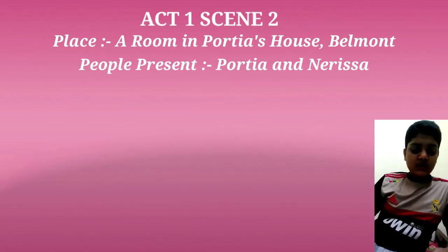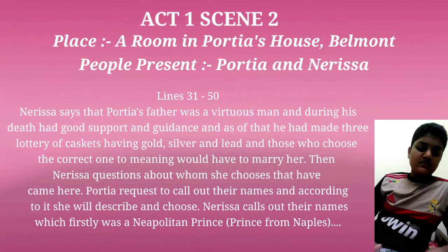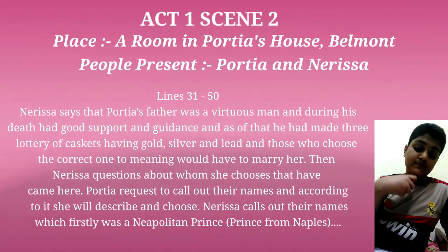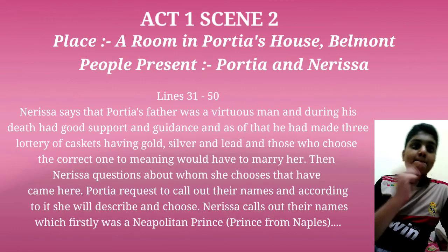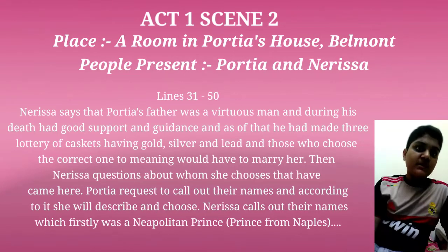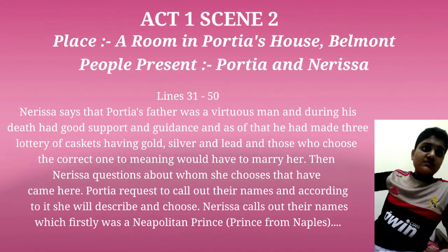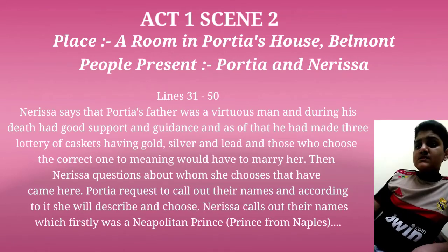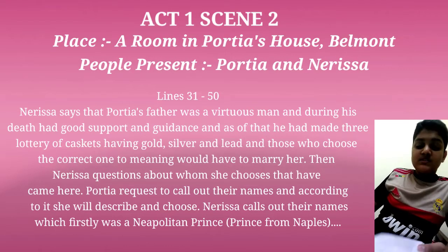Continuing lines 31 to 60: Portia's father was a virtuous man, and when he was near death he had good inspiration, devising a lottery of caskets to determine Portia's suitor. There were three chests — one gold, one silver, and one lead. Whoever chooses the right casket, according to its meaning, will marry Portia. Portia asks Nerissa to name the suitors so she can describe them one by one.